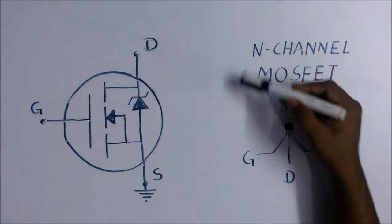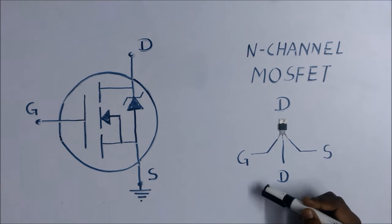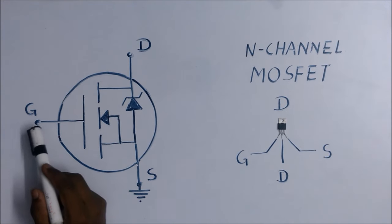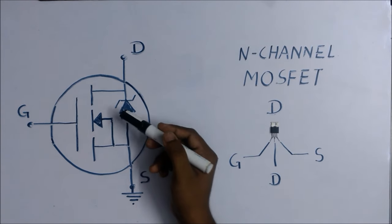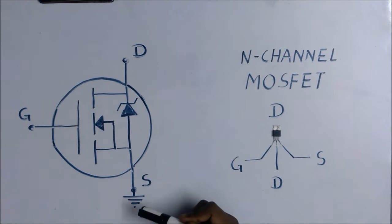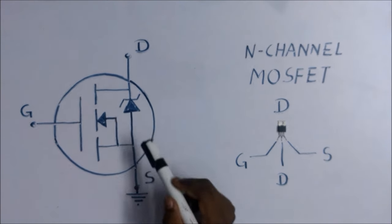Let us refresh the concept about N channel MOSFET. To turn on the MOSFET we have to apply voltage over the gate terminal. Because of that there is a formation of channel between drain and source terminal, so conduction between drain and source is happening.